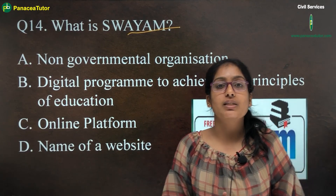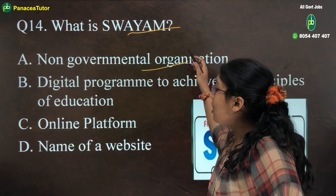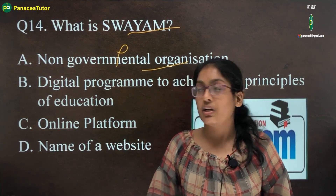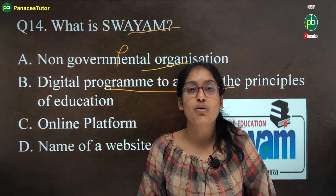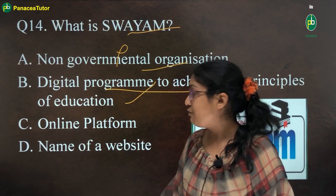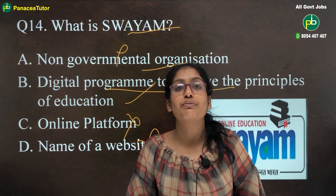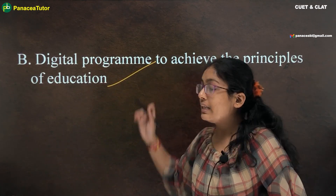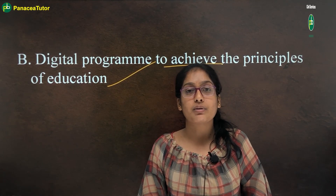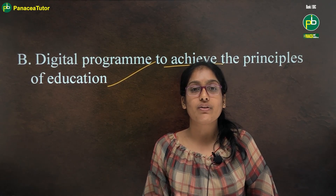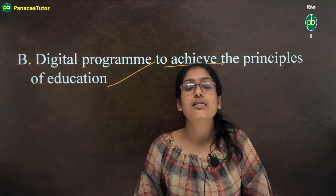The next question is: what is SWIM? SWIM stands for Study Webs of Active Learning for Young Aspiring Minds. It is not an NGO — it is a government-oriented digital program to achieve the three cardinal principles of education. It is not an online platform but an online course, and it is not a website name. The correct answer is option B: a digital program to achieve the principles of education. The three cardinal principles are: access (education should be available to all), quality (quality learning), and equity (equal education for all without discrimination).